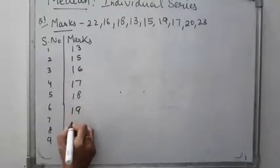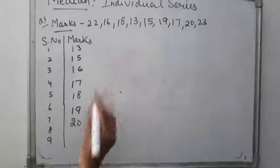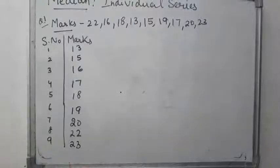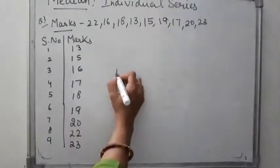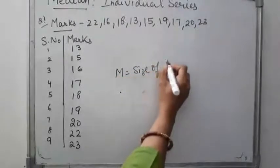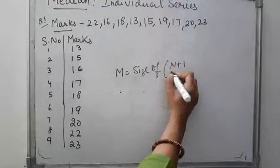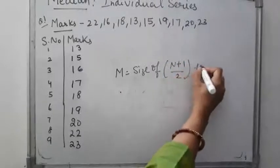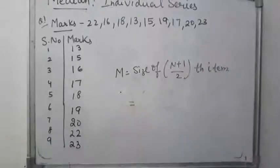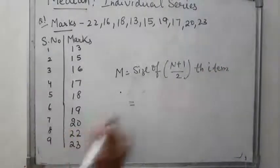Continuing the ascending order: 19, 20, 22, 23. So we have to calculate the marks in ascending order. Then we apply the formula: size of (N + 1) / 2 th item. Here N = 9, so (9 + 1) / 2 = 10 / 2 = 5.